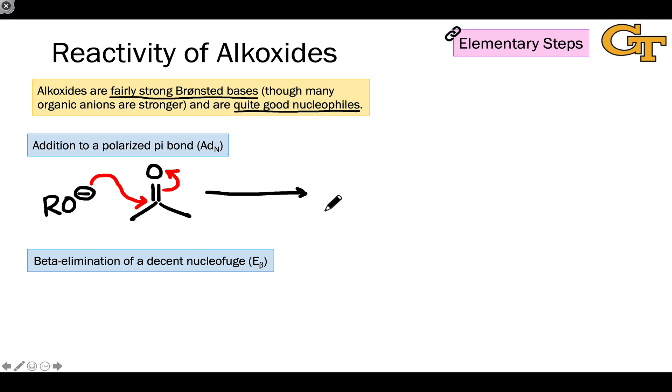The intermediate resulting from this, in contrast to the previous example with neutral alcohols, is now negatively charged, and the negative charge resides on the former carbonyl oxygen.